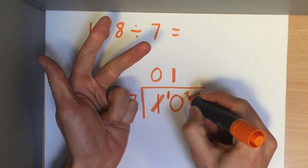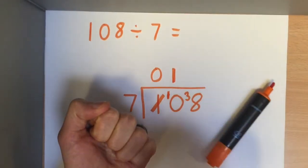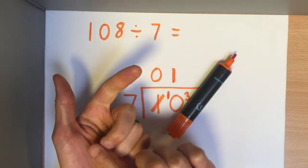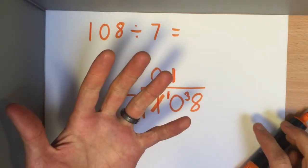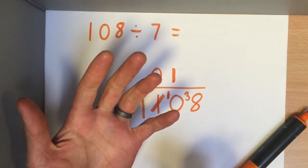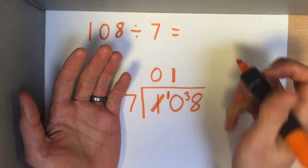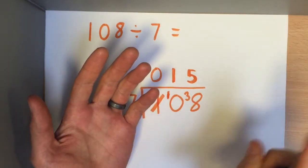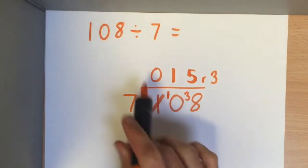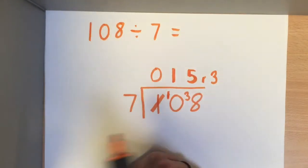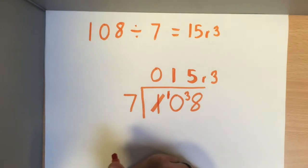Now I do 7 into 38. Again, it's really important to know the 7 times table: 1×7=7, 2×7=14, 3×7=21, 4×7=28, 5×7=35 — close to 38 — 6×7=42, that's too far. So 5×7=35 is the closest I can get: 7 goes into 38 five times remainder 3, because 36, 37, 38 — that's 3 left over. So our answer is 108 divided by 7 equals 15 remainder 3. I don't need the leading zero as a placeholder. That is my answer.